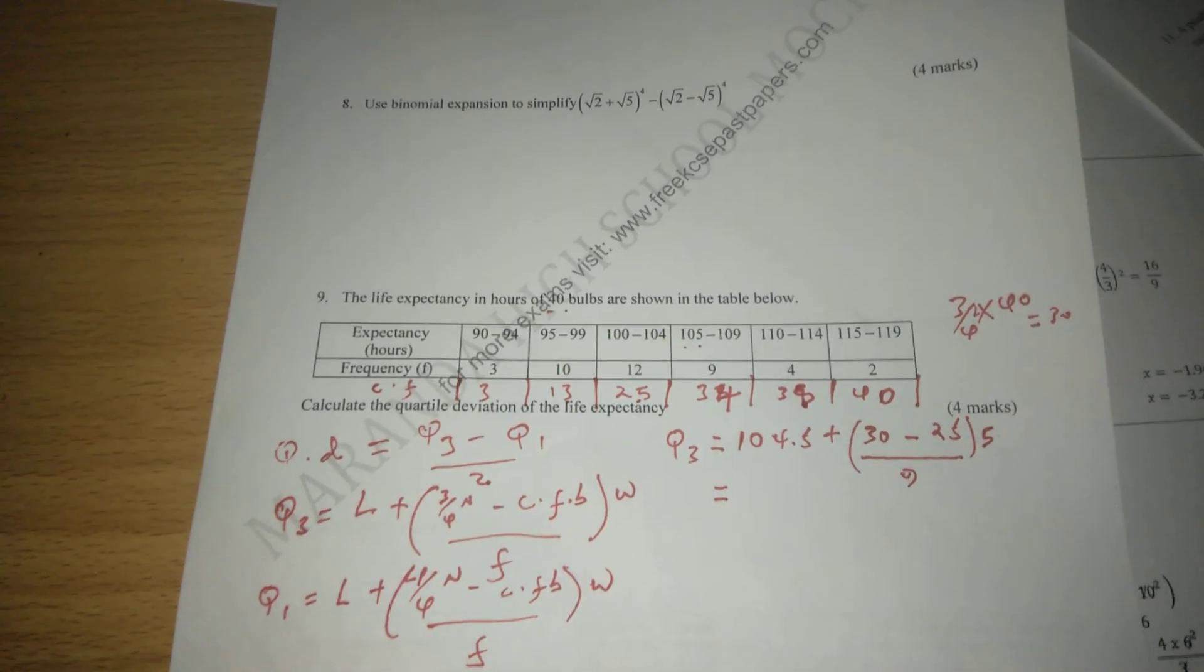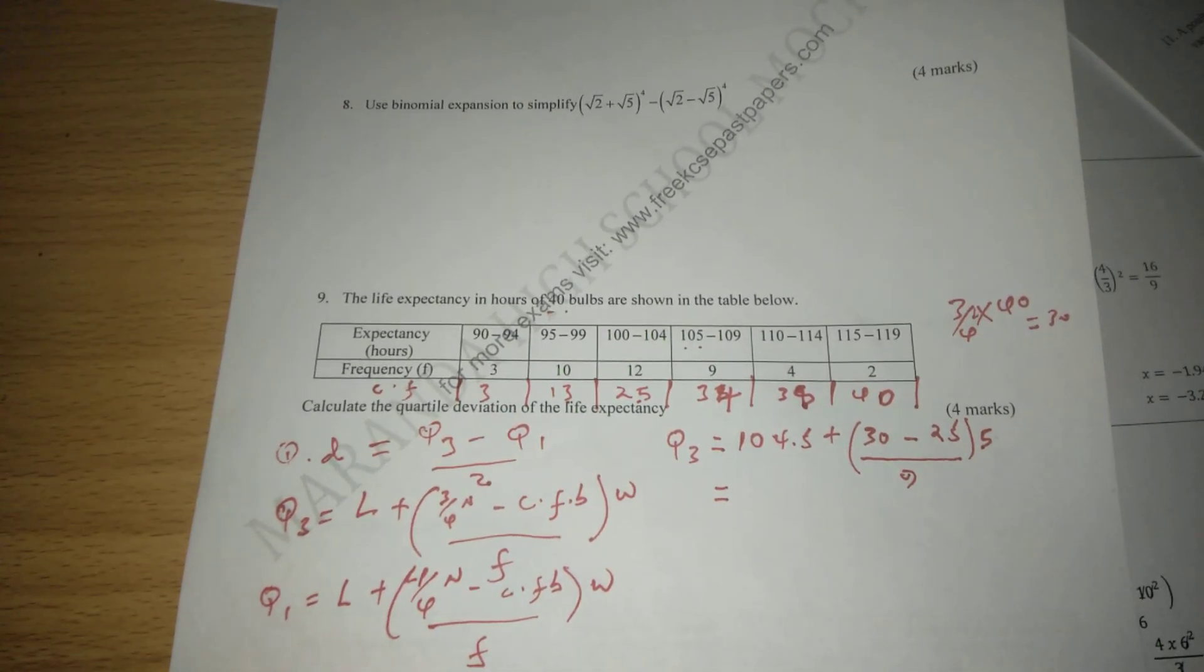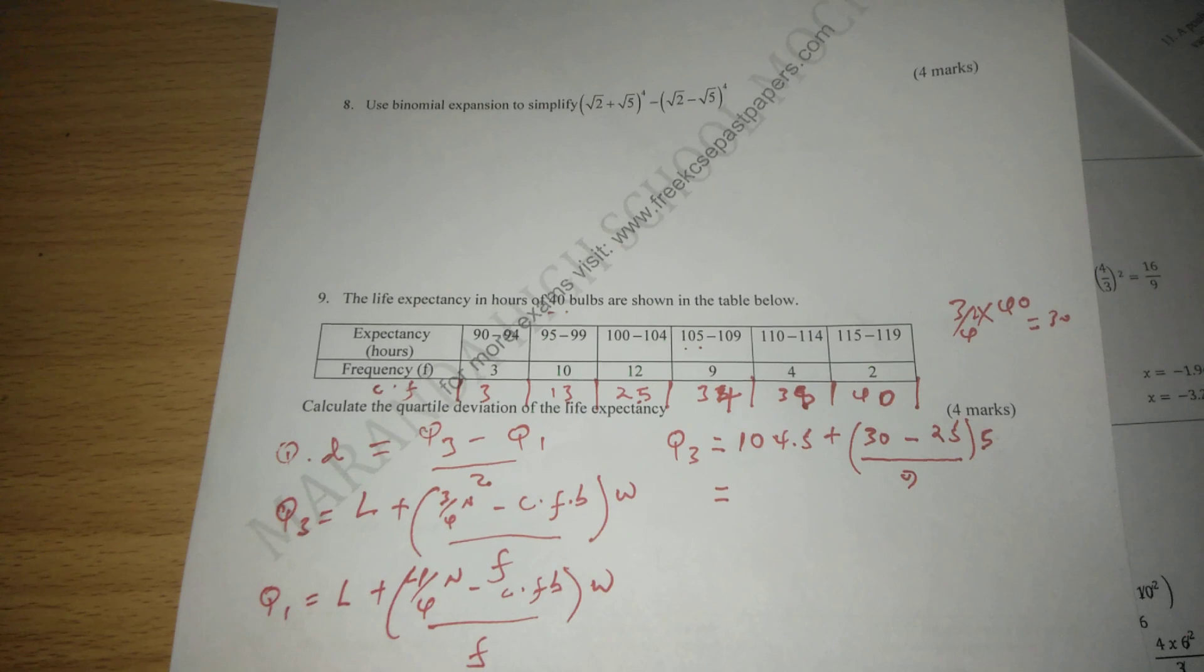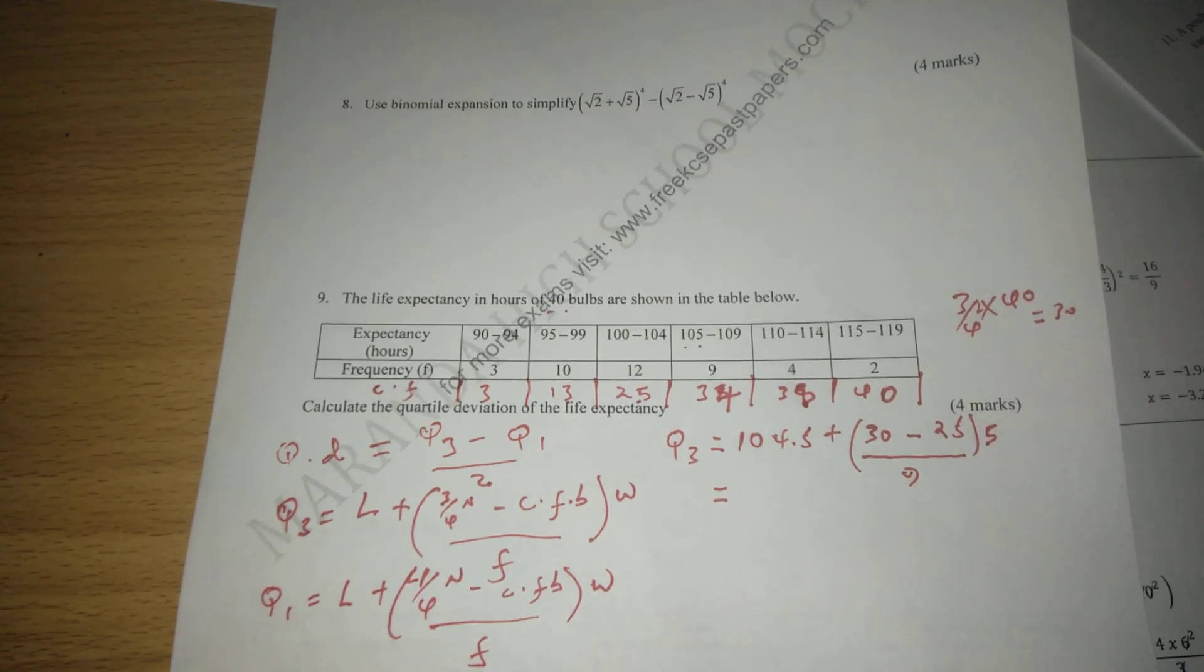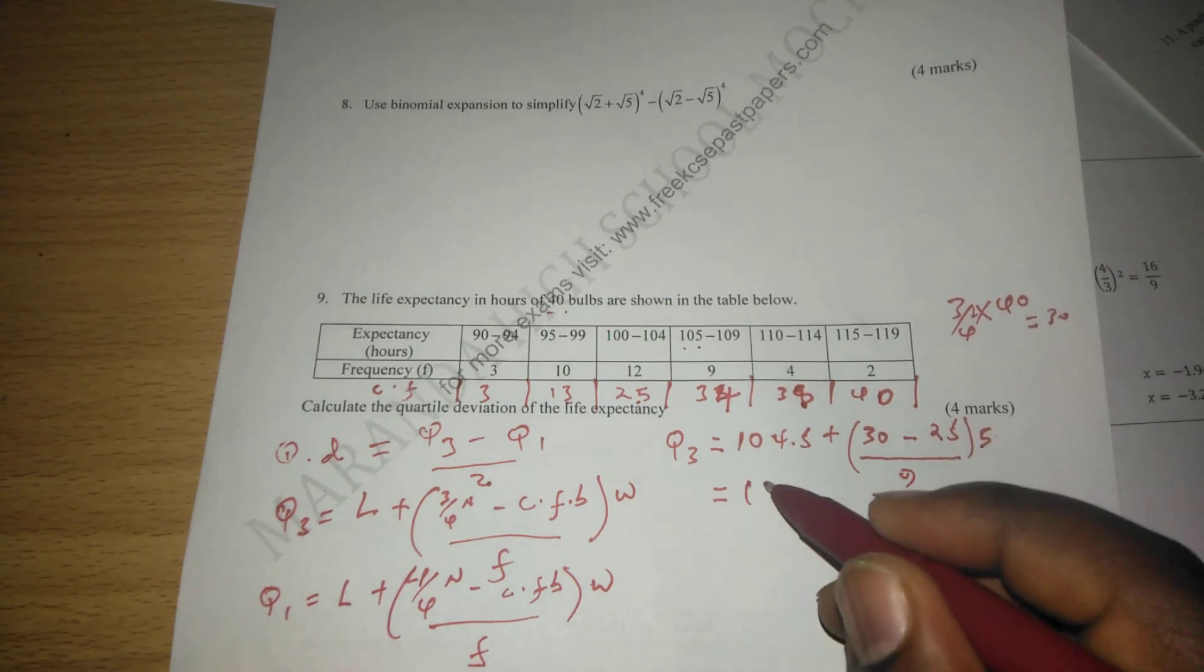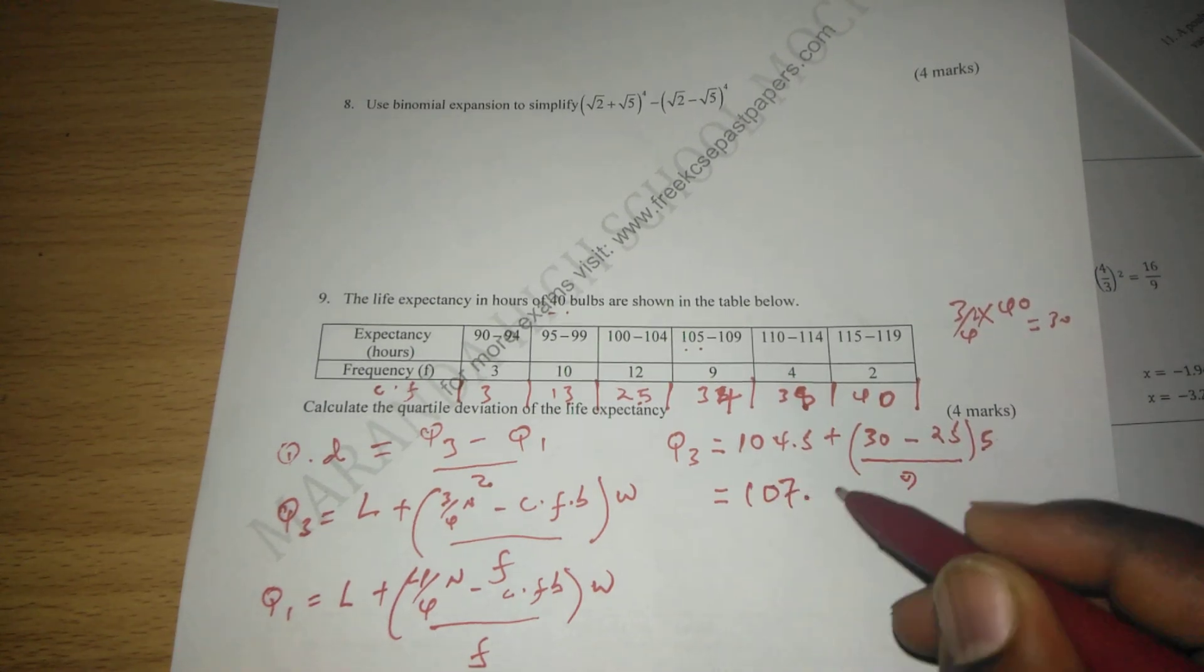So this is going to give us Q3, which Q3 will be 30 minus 25, which is 5, divided by 9, and we multiply with 5. So this will be 104 plus 2 points, and that gives us 107.28.